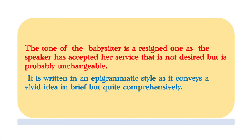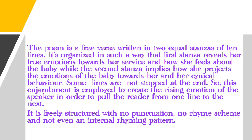The tone of the babysitter is a resigned one, as the speaker has accepted her service that is not desired but is probably unchangeable. It is written in an epigrammatic style as it conveys a vivid idea in brief but quite comprehensively. The poem is a free verse written in two equal stanzas of ten lines, organised so that the first stanza reveals her true emotions towards her service and how she feels about the baby, while the second stanza implies how she projects the emotions of the baby towards her and her cynical behaviour. Some lines are not stopped at the end, so enjambment is employed to create the rising emotion of the speaker and pull the reader from one line to the next.